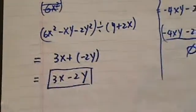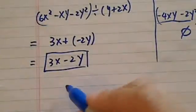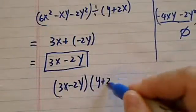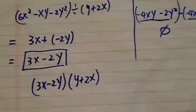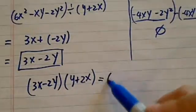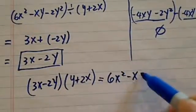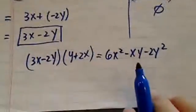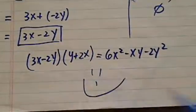If you want to check your answer, what you can do is do 3x minus 2y, multiply it to y plus 2x. By property of division and multiplication, you should have 6x squared minus xy minus 2y squared back. Alright. Have a confident day.